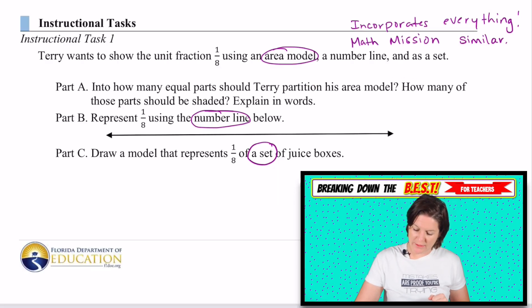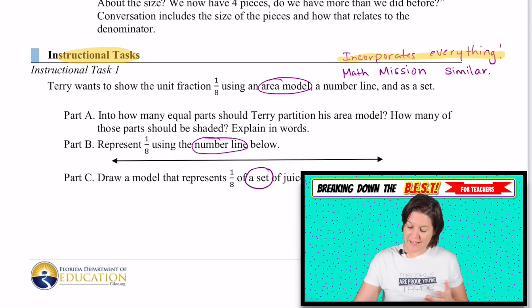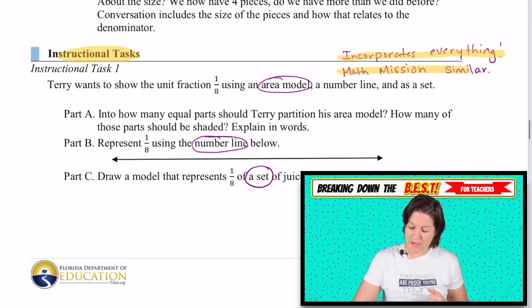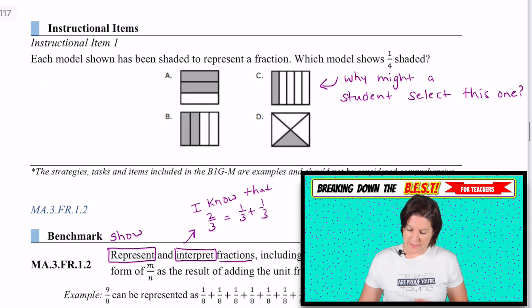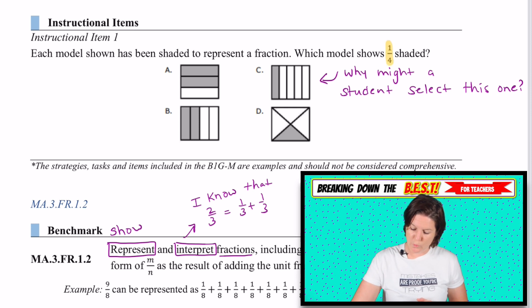I just pointed out that I love this instructional task because it incorporates everything here. And we do have a math mission that is similar to this. Here we're incorporating that area model, incorporating the number line, incorporating the set. So take a look at that so you can see what the standard looks like in action. And then here says which one shows one fourth shaded. We need to be thinking in terms of the students of why might a student select this one. They might select it because there's one shaded in and then there's four other parts. So this is a misconception in action right there.